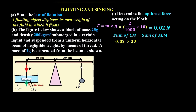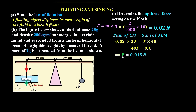For the anti-clockwise moments, force F acts over a perpendicular distance of 40 centimeters from the pivot, giving F times 40. So we have 40F = 0.6. Dividing both sides by 40, force F equals 0.015 newtons.